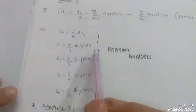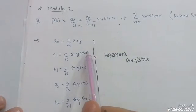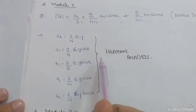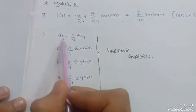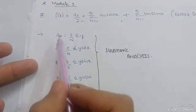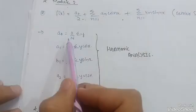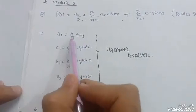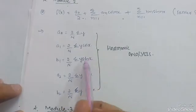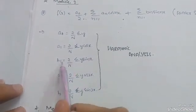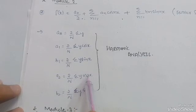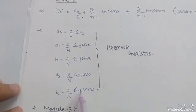Another very important topic in Module 2 for VTU is harmonic analysis. It is a value-based question. In some questions you calculate only a₀, a₁, and b₁; in others, also a₂ and b₂ (second harmonic). The formulas are: a₀ = (2/n)Σy, a₁ = (2/n)Σy·cos(x), b₁ = (2/n)Σy·sin(x), a₂ = (2/n)Σy·cos(2x), and b₂ = (2/n)Σy·sin(2x).